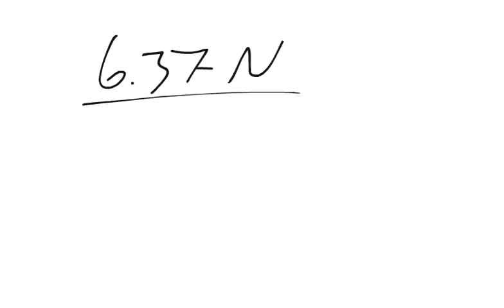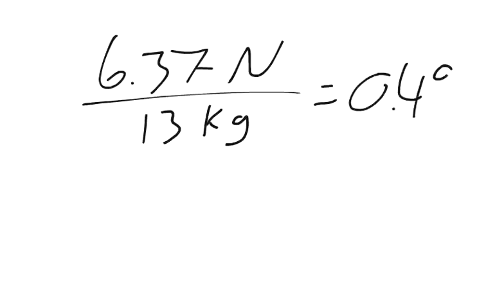So with 6.37 newtons, we divide that by our mass, which is the mass of both objects. So 9.5 plus 3.5, a mass of 13 kilograms. And we will accelerate at 0.49 meters per second squared.